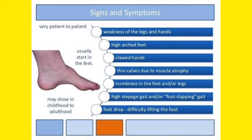The signs and symptoms include: number one, weakness in the legs and hands; a very high arch foot — you can see the high arch foot in the picture on the left side; clawed hands; and thin limbs due to muscular atrophy. You can see muscle atrophy in this disease, along with numbness of the feet and legs.